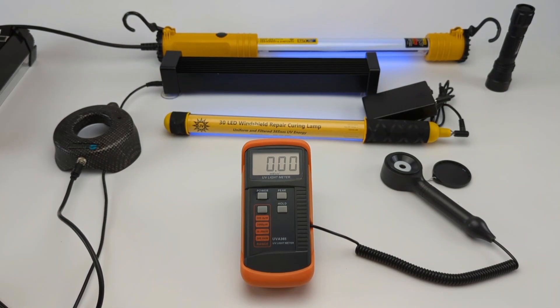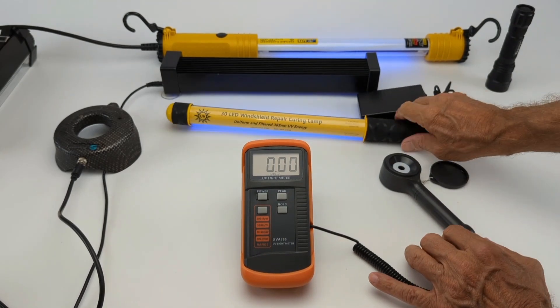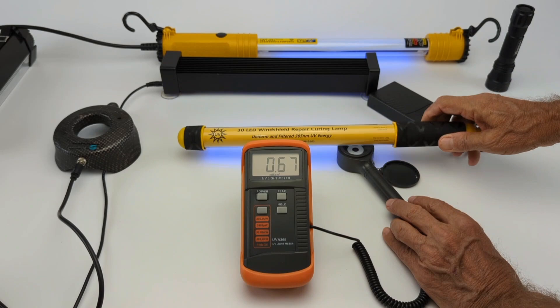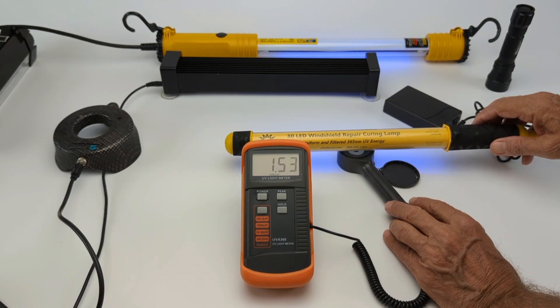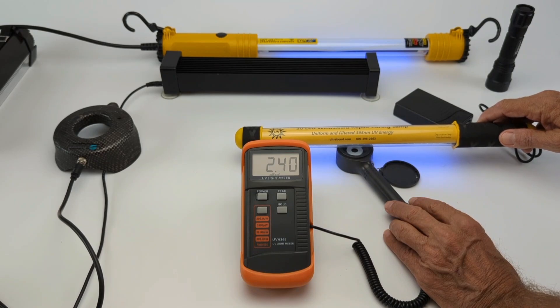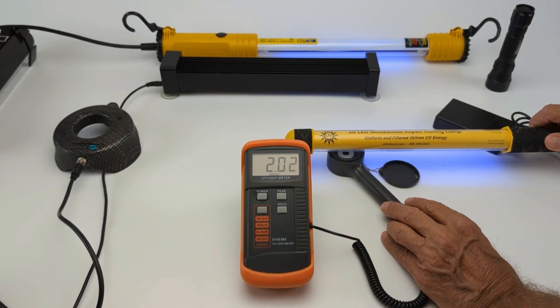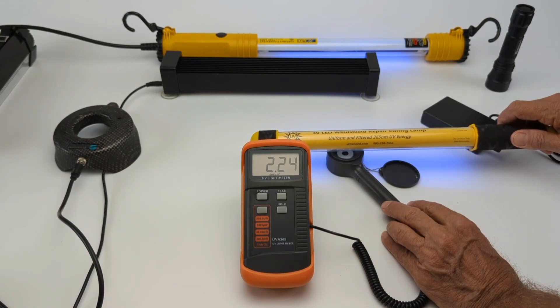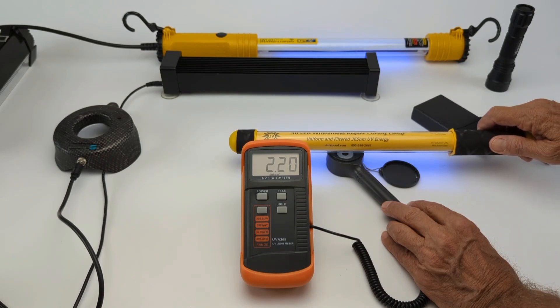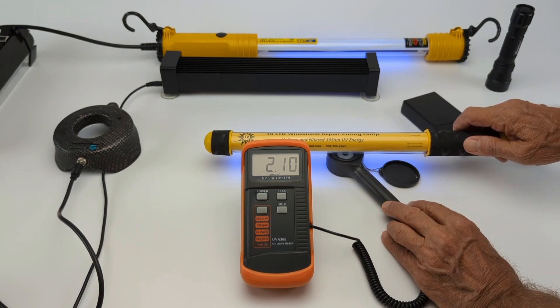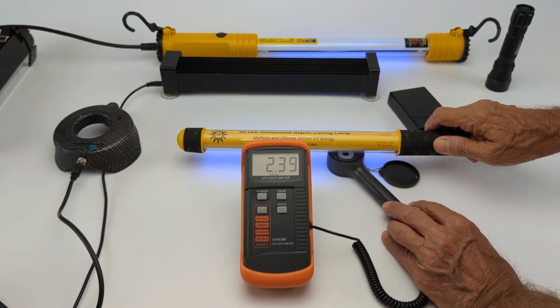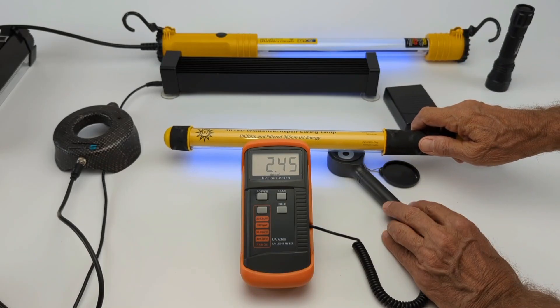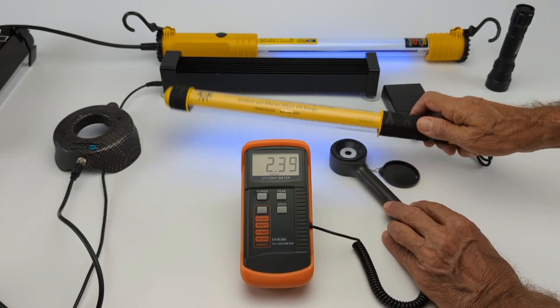Here's the charger for it, but what we want to see is uniform energy as we go across the meter. See how it stays around 1.7, right around 2. Now, that is uniform UV energy across your crack, and this is going to cure in one to two minutes. Cure a pit in one minute.